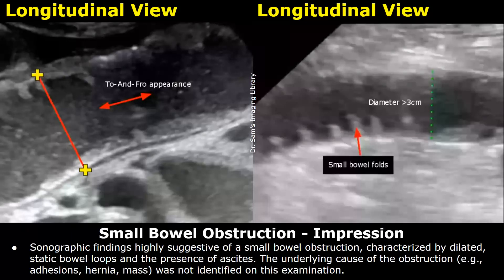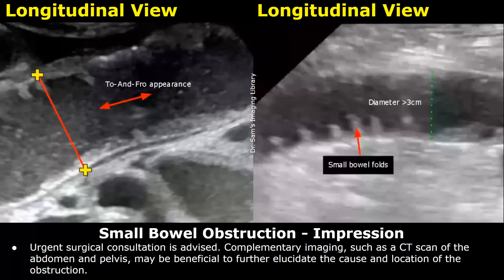Impression: sonographic findings highly suggestive of small bowel obstruction, characterized by dilated static bowel loops and the presence of ascites. The underlying cause of the obstruction — for example, adhesions, hernia, or mass — was not identified on this examination. Urgent surgical consultation is advised. Complementary imaging such as a CT scan of the abdomen and pelvis may be beneficial to further elucidate the cause and location of the obstruction.